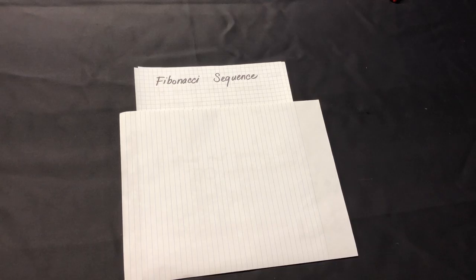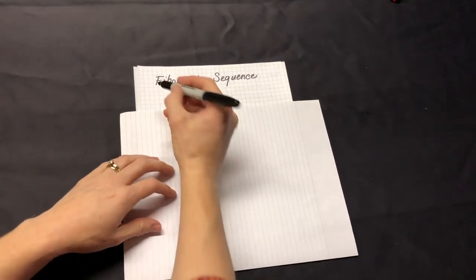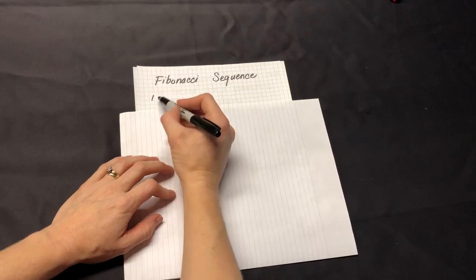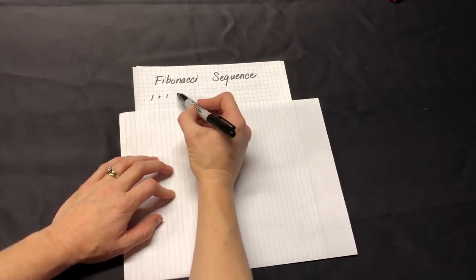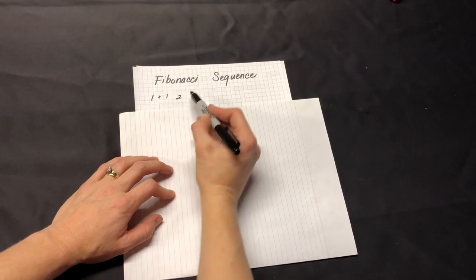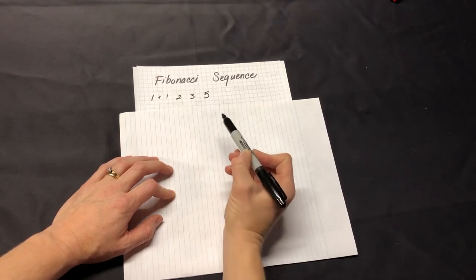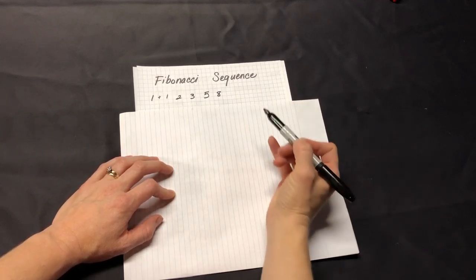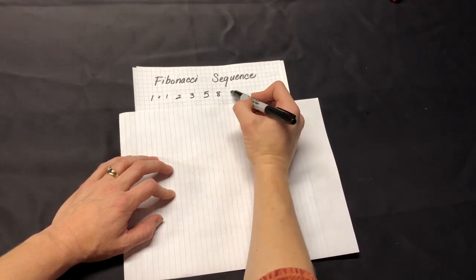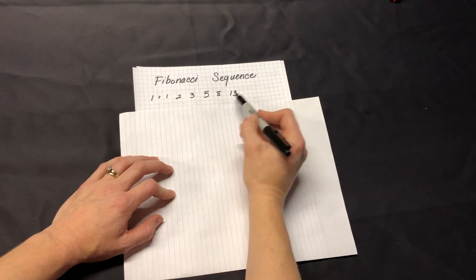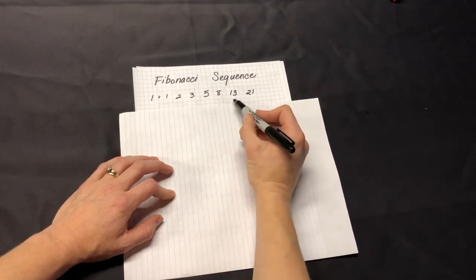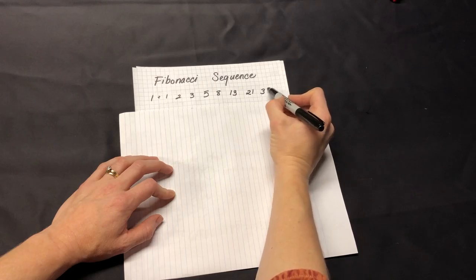Now let's go back to Fibonacci. He came up with a sequence of numbers that is simply beautiful and elegant. Starting with one: 1+1=2, then take the last two numbers and add them — we get three. Two plus three is five. Three plus five is eight. Five plus eight is thirteen. Super fun, super satisfying, and a very elegant little number sequence.